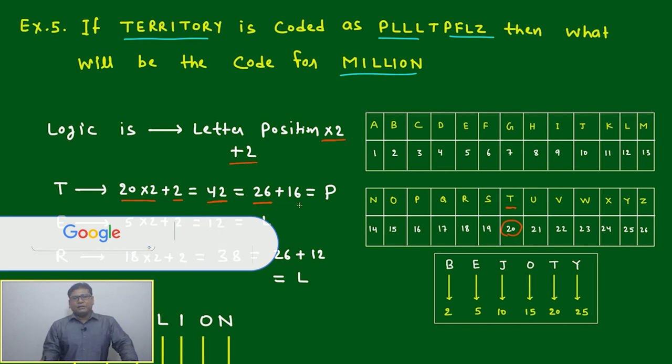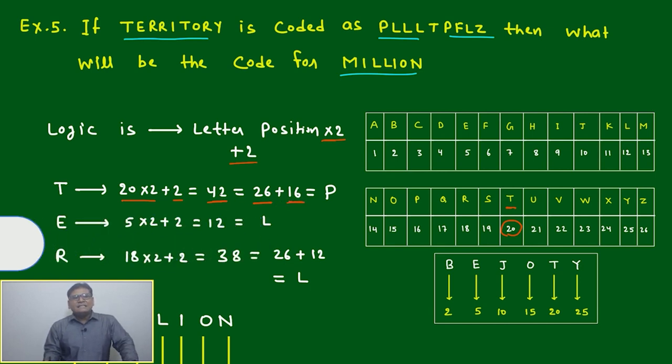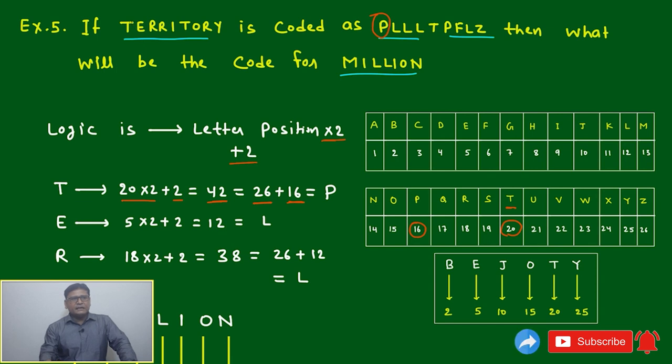This means T is changed to P based on the logic of 20 into 2 plus 2. What is 20? 20 is the position of T. Multiplied by 2, afterwards you add 2, we got 42. Once you are getting more than 26, you just continue the number after 26.